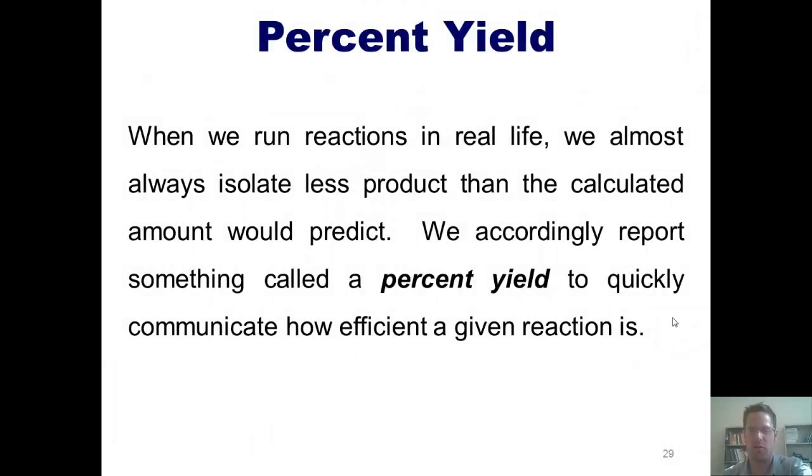Now to a new subject, that of percent yield. When we run reactions in real life as chemists, we almost always make less product than we would calculatedly make. It's kind of frustrating, but true. So we accordingly report something called a percent yield to quickly communicate to others how efficient a particular reaction is. Here's how that works.